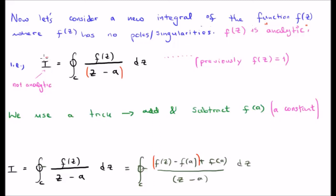Let's consider our integral i. i is going to be the closed contour integral in a counterclockwise direction of small f of z divided by z minus a. This function here is capital F of z. So we're integrating capital F of z around our contour. Previously, of course, f of z was equal to 1.